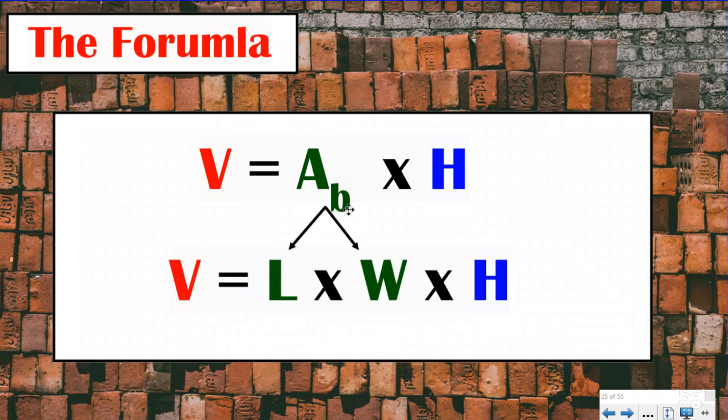And when we don't have the area of the base, we're going to decompose it into our length and our width and use our area formula to find our area of the base and then multiply it by the height. So we're going to be using both of our formulas: V = A_b × H or V = L × W × H.